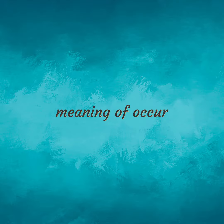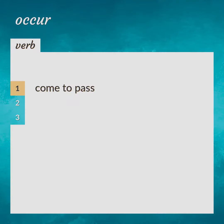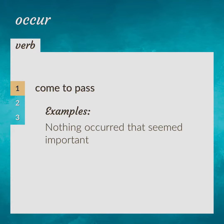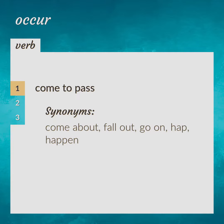Meaning of occur. Come to pass. Nothing occurred that seemed important. Synonyms: come about, fall out, go on, hap, happen.